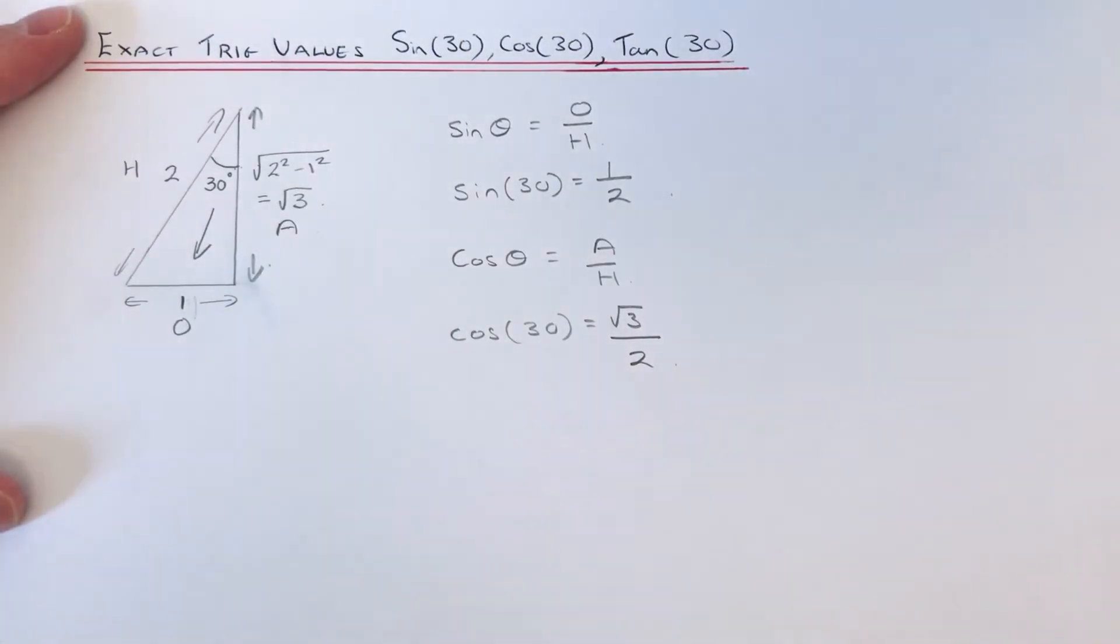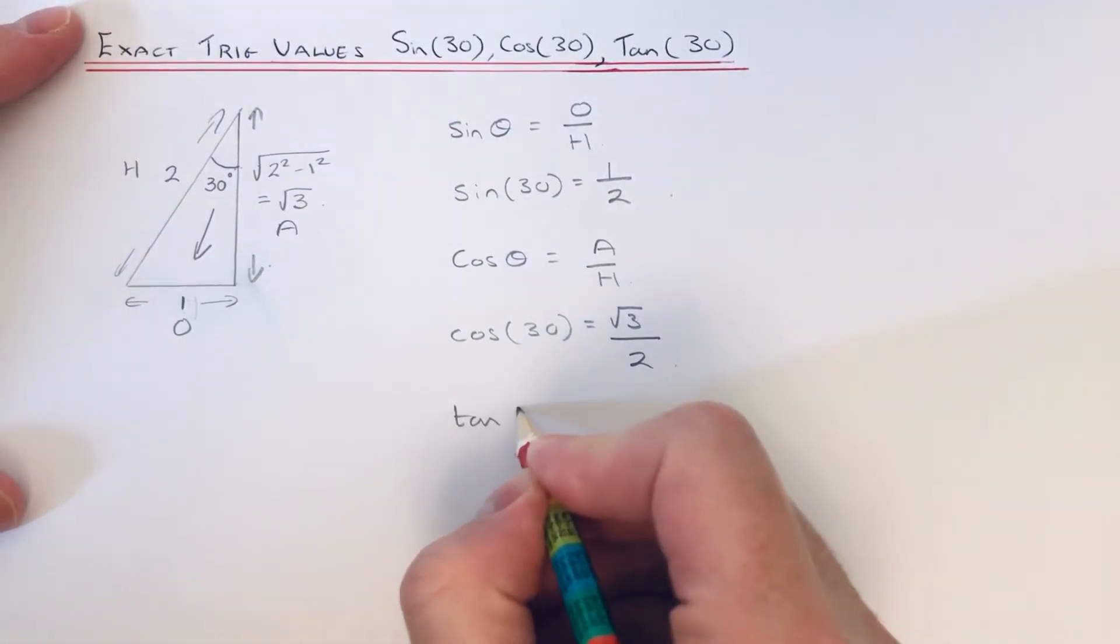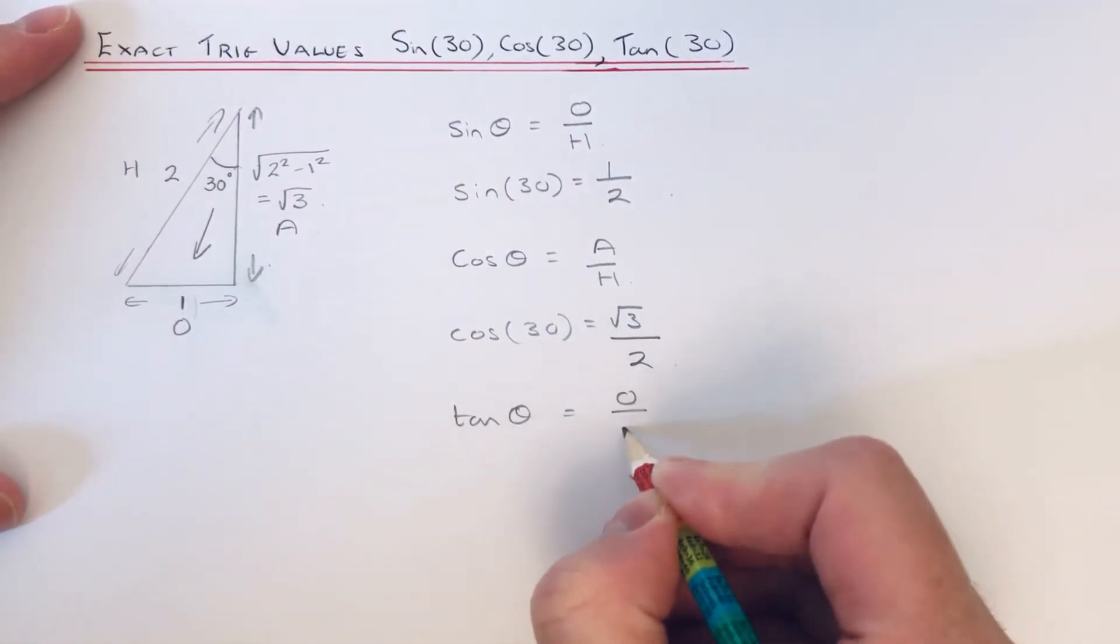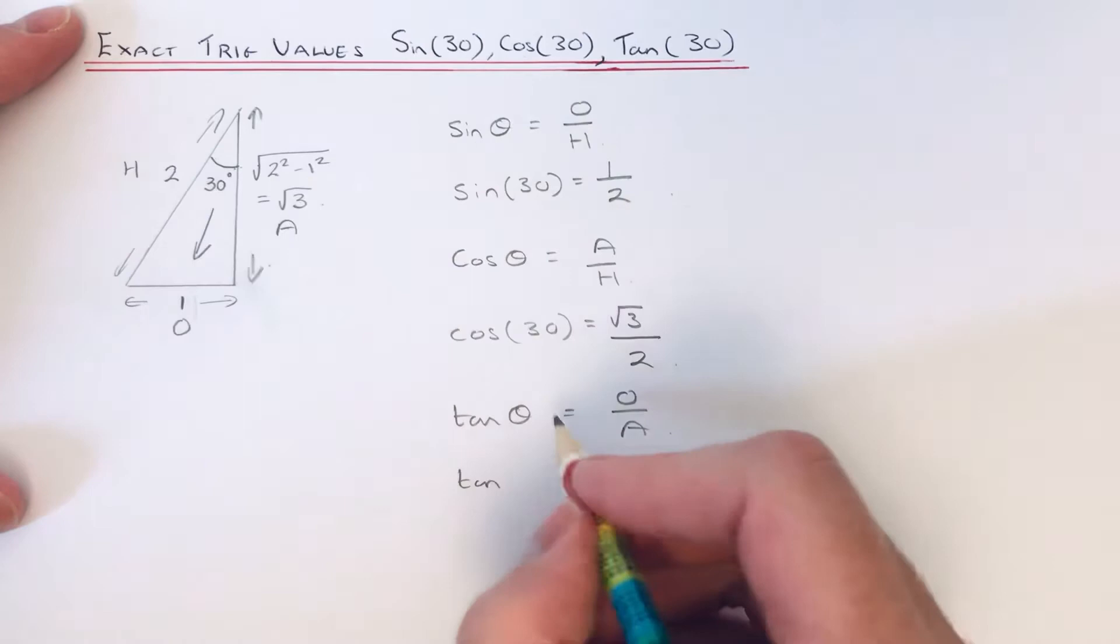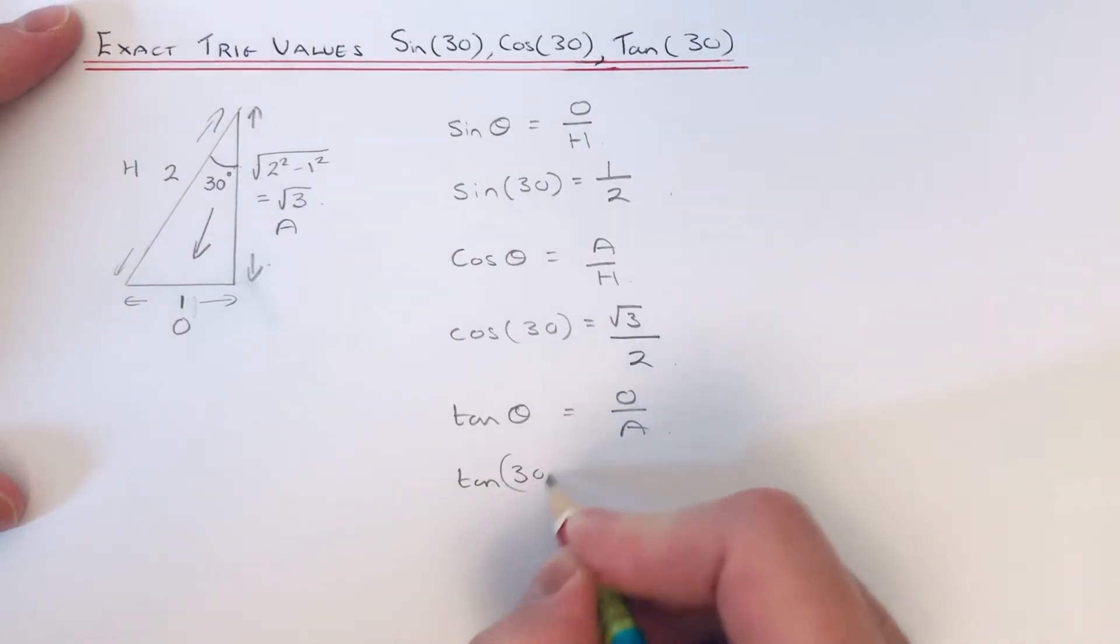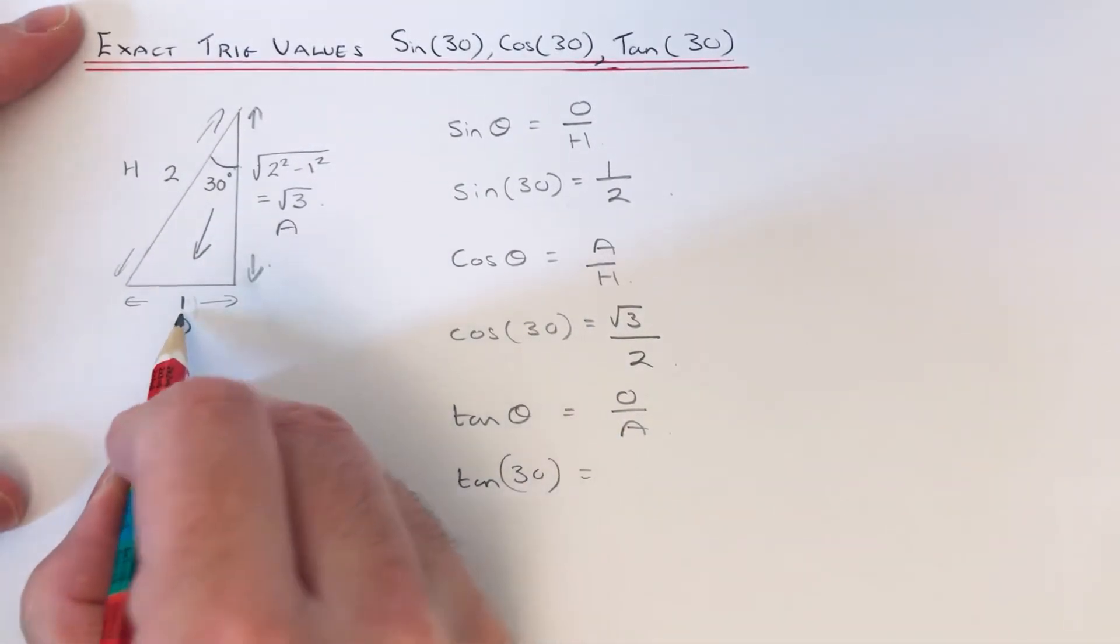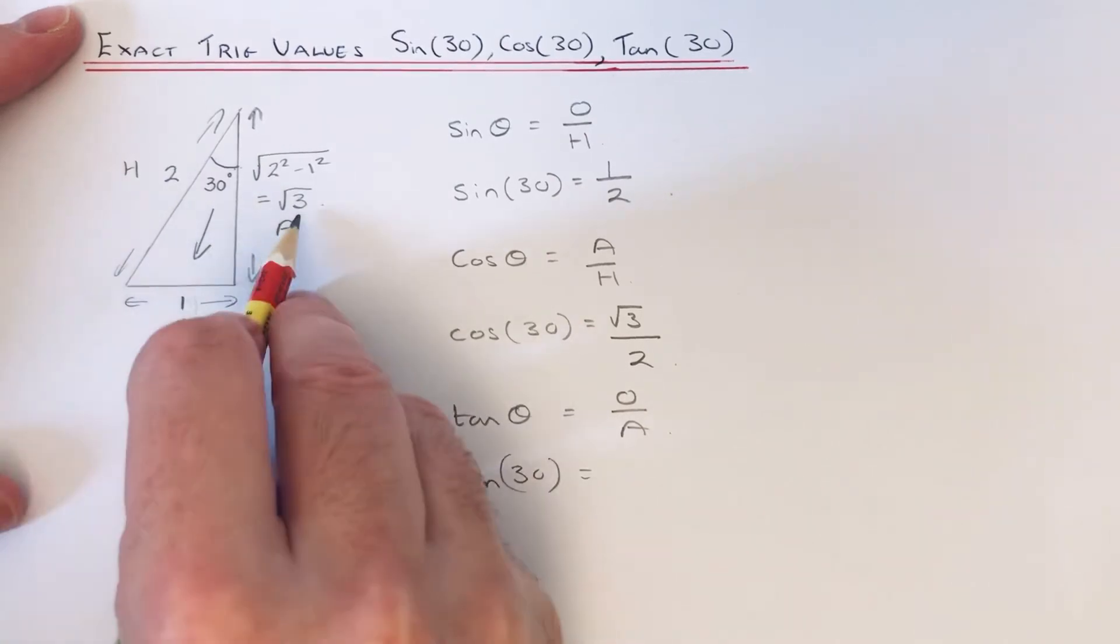Finally, our value for tan. Tan θ is the opposite over the adjacent. So again, if we substitute our numbers in, tan(30°) is equal to 1 over the adjacent √3.